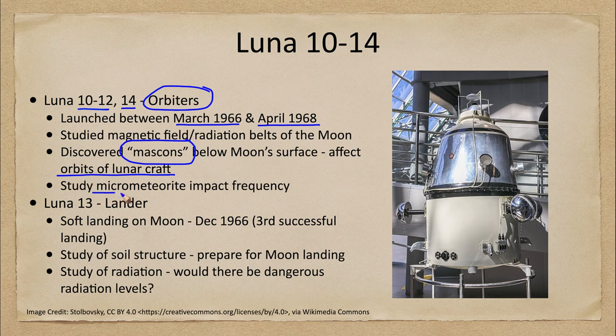Another thing studied was how often micrometeorites — very tiny pieces of material — would impact the spacecraft. These are things we don't have to worry about here on Earth because they are burned up in our atmosphere and never make it down to the surface. However, the moon having essentially no atmosphere, they would make it down there.